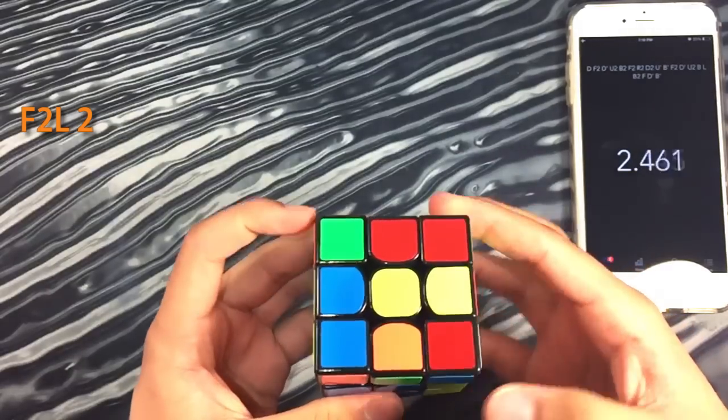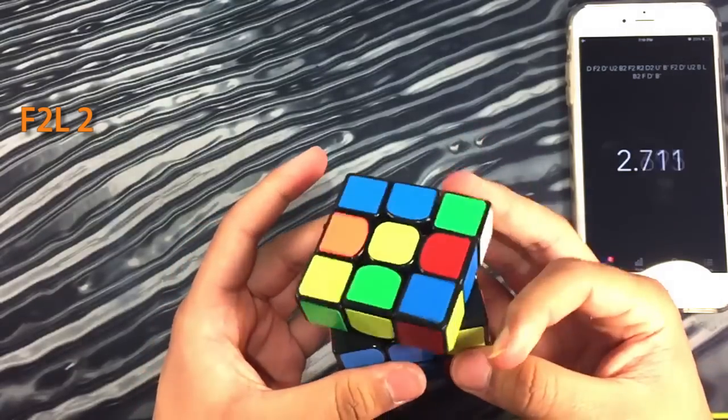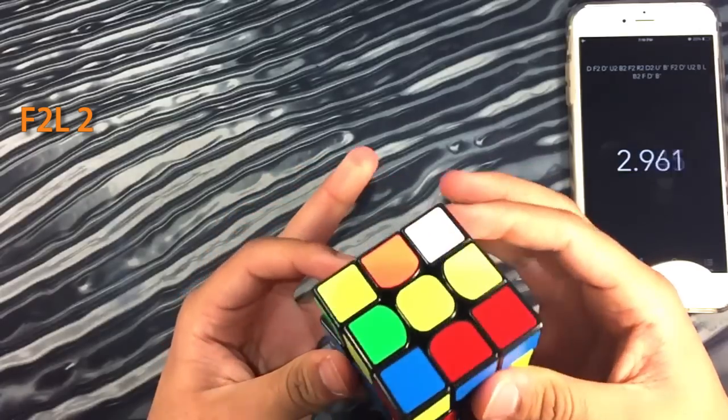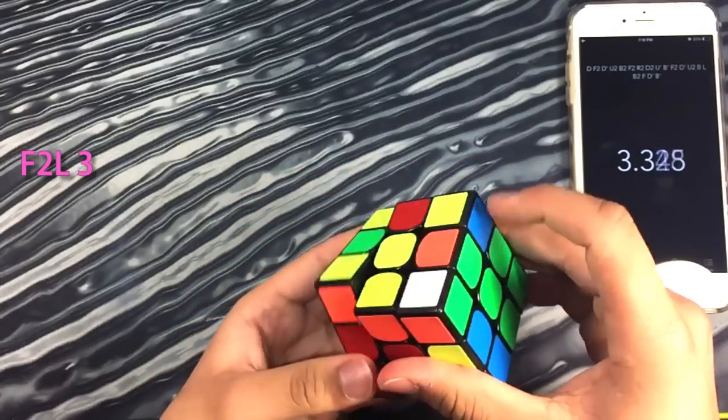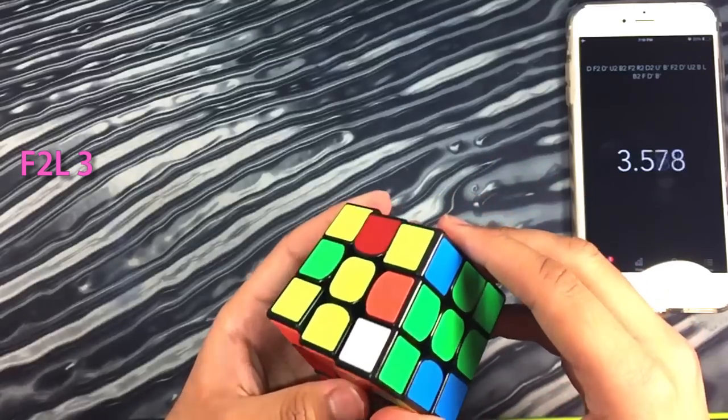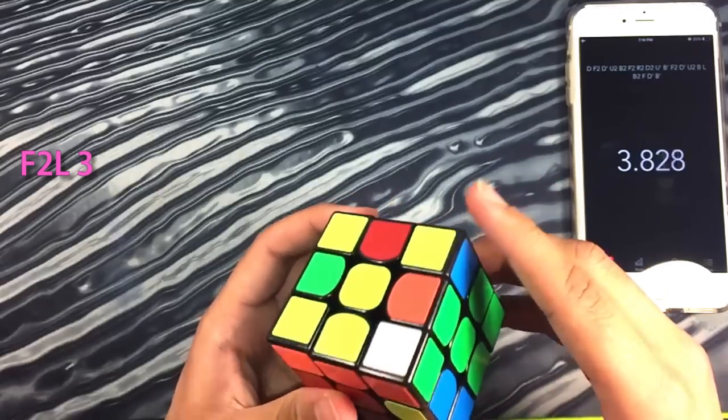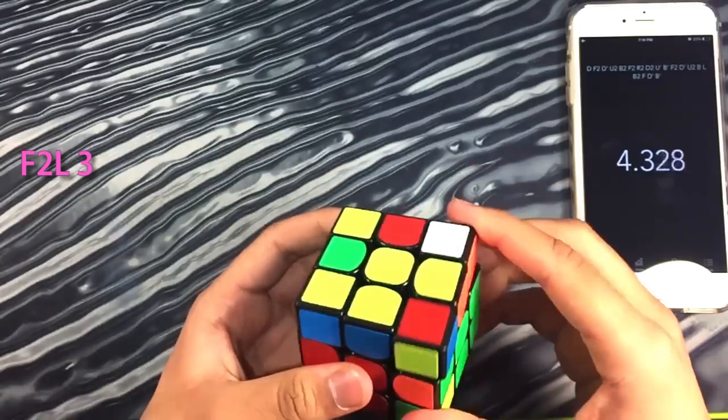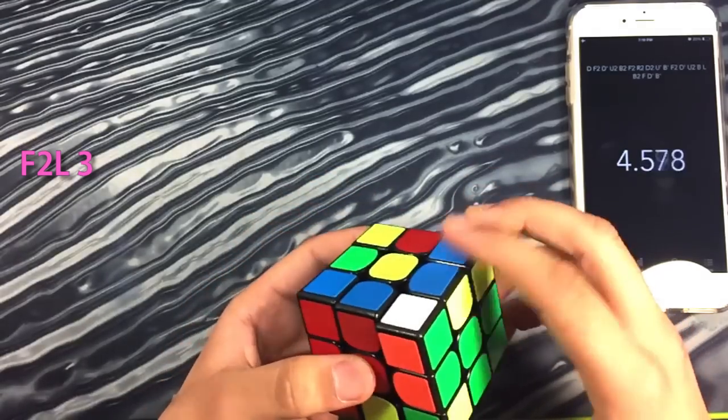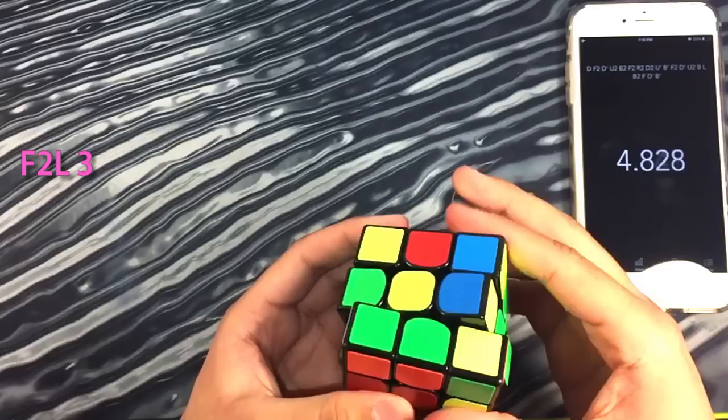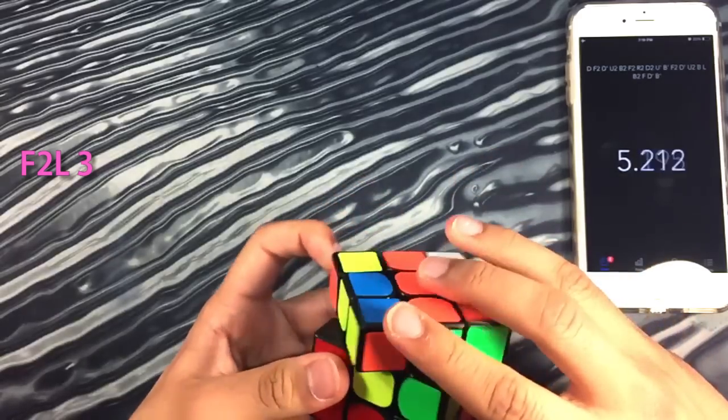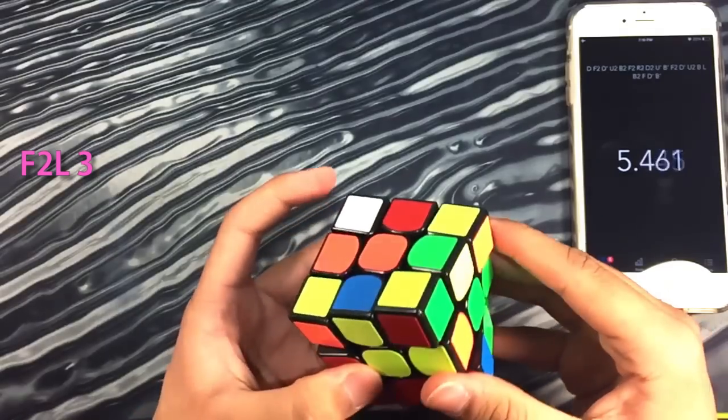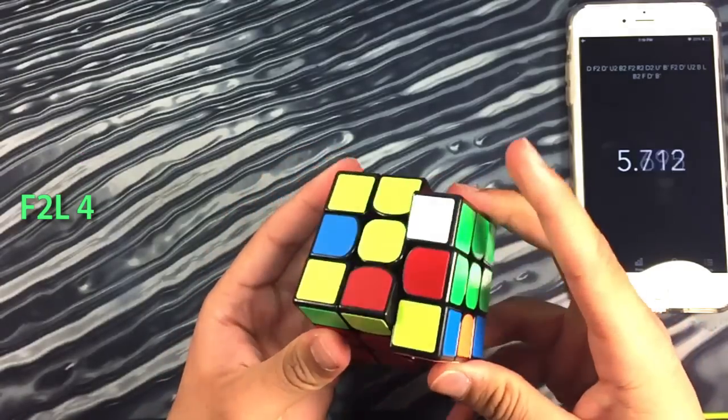Next I noticed the blue and red edge piece was flipped so I quickly took that out and flipped it around and reinserted it. From here I noticed the green and orange pair this was also a tricky case but I learned an algorithm for this so I was able to solve that one quickly and once I solved the pair I inserted it into the back right using that algorithm that I showed you guys earlier very very handy as you can see.